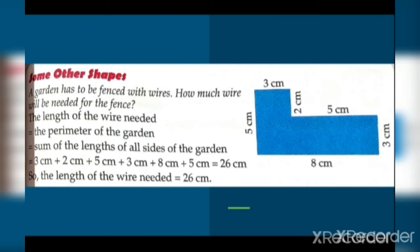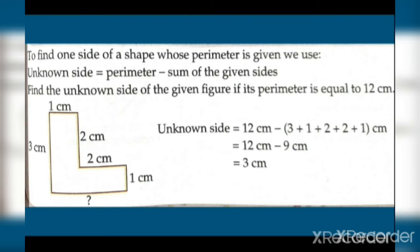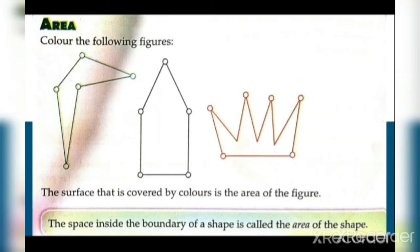A garden is to be fenced with wires. To find one unknown side of a shape when the perimeter is given, we use: unknown side equals perimeter minus the sum of all the given sides. We write the perimeter, subtract the known sides, and the answer is 3 cm. So the missing side is 3 cm.